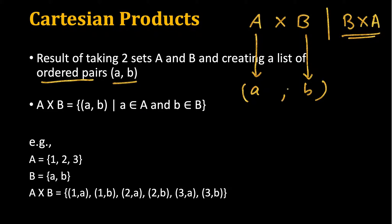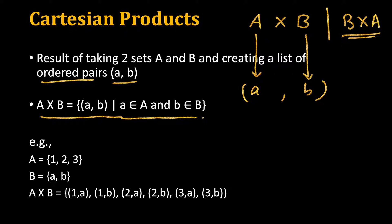It is all the possible ordered pairs that we can generate from two sets, such that the first element comes from the first set and the second element comes from the second set. This is called the Cartesian product — it is the set of all such ordered pairs, and we don't skip any.